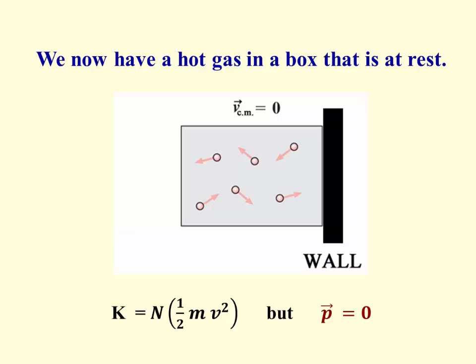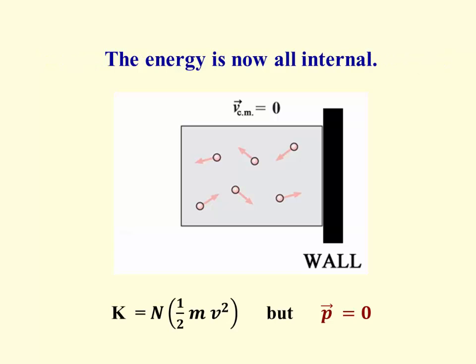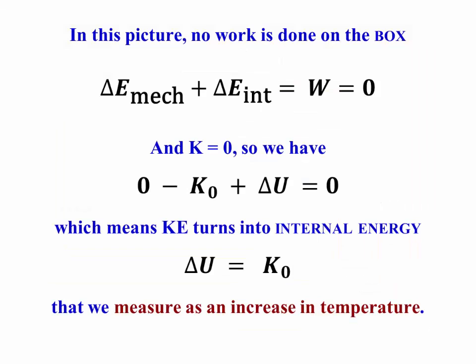We now have a hot gas inside a box that's at rest. As the atoms have bounced around, their directions have become random, and therefore their individual momentum vectors add to zero. However, their scalar kinetic energies still add up to the original number that we had. That is, momentum has changed but not kinetic energy. The box has come to rest but it's still got energy. That energy is now all internal, and that's what we call hot.